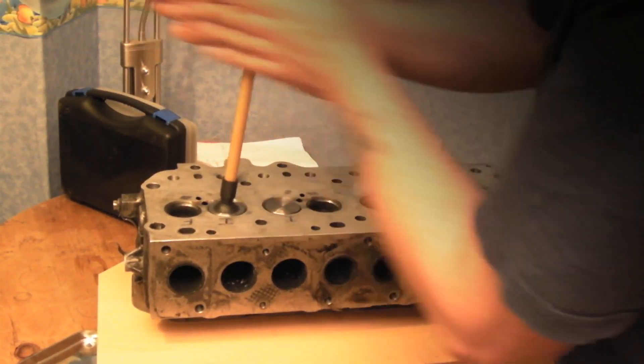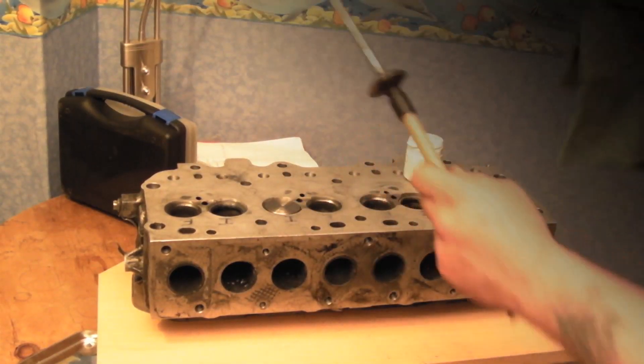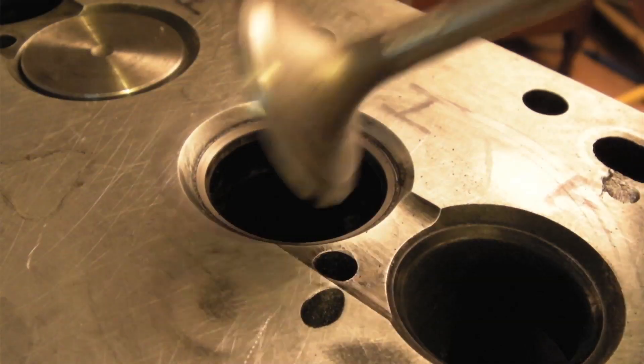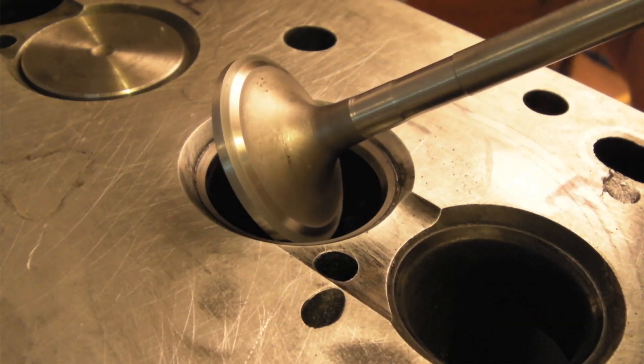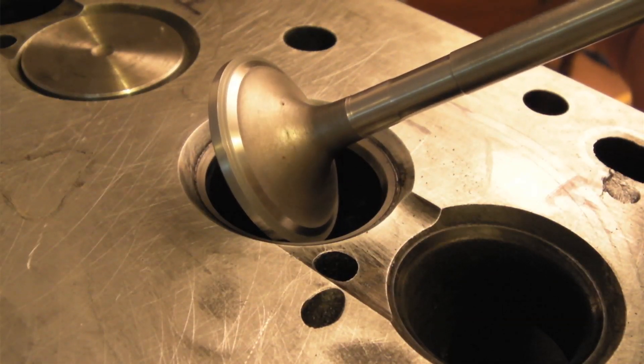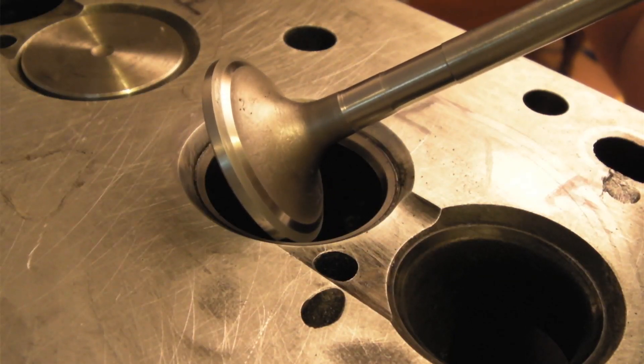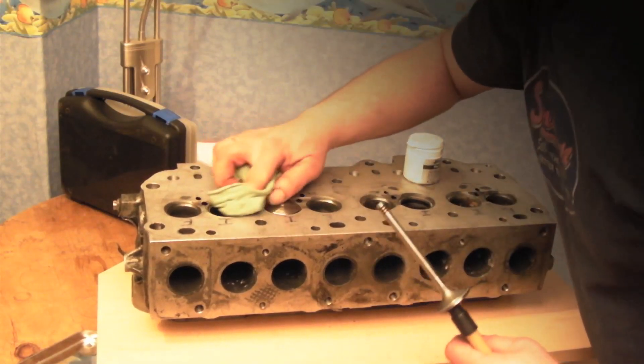This will take a little bit of time to do. I'll whip this out and wipe it, and we'll have a look. What we're looking for is a complete gray band all the way around the valve, as you can see there, and on the valve seat itself, without any evidence of little black marks, which would be the pitting.